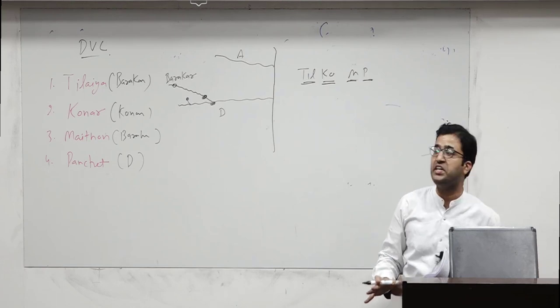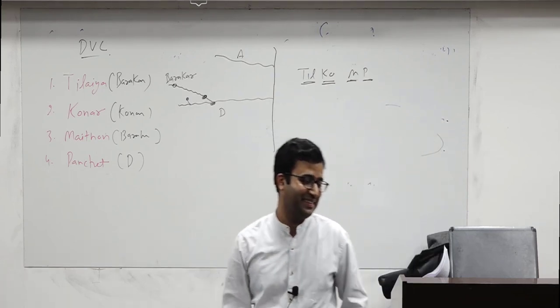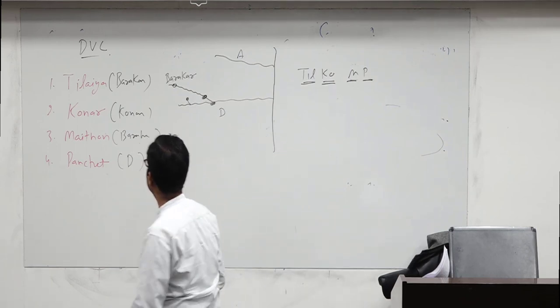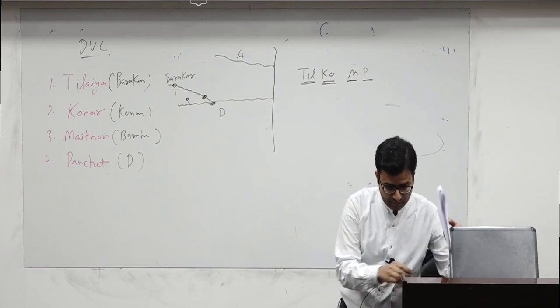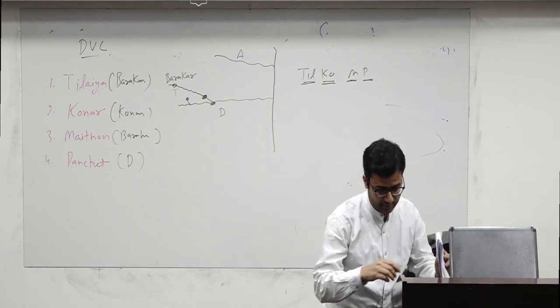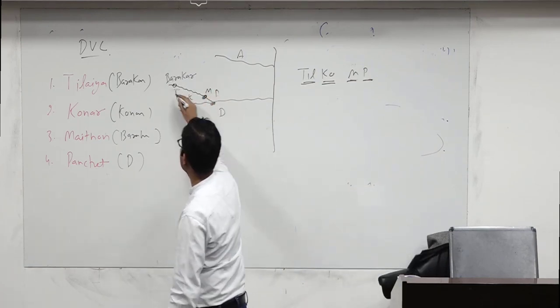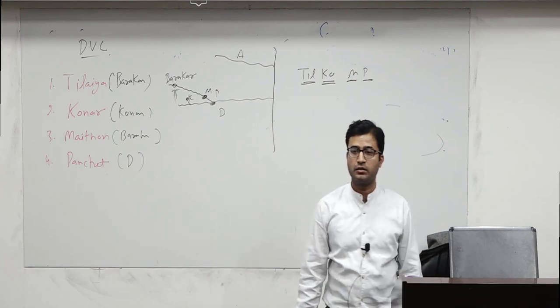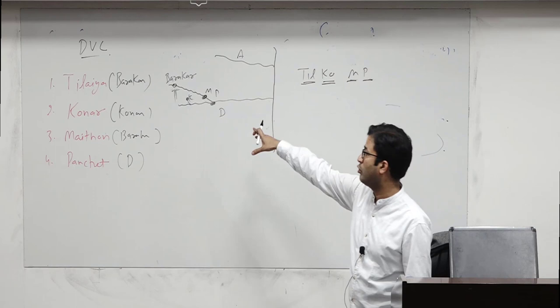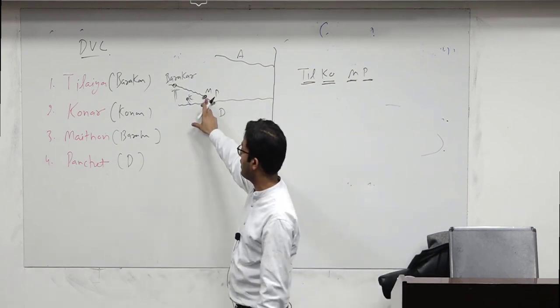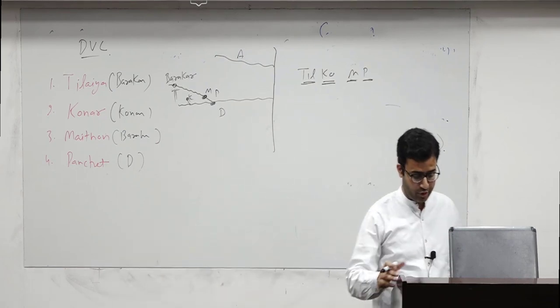This complete is known as DVC. Deli, sorry, Damodhar Valley Corporation, not Deli. Damodhar Valley Corporation. This is TKMP. Tilaiya, Konar, Methon, Panchet. Tilaiya on Barakar River, Konar is Konar River, Methon is on Barakar River, Panchet is on Damodhar River. Sequence, you make this diagram and you remember this.